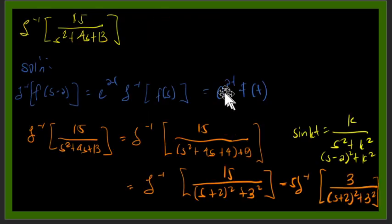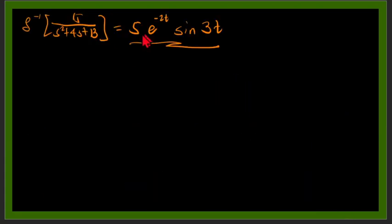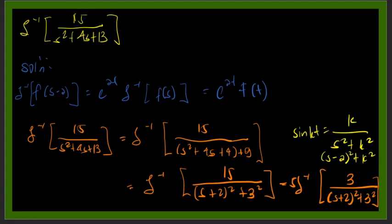And we follow also this one, e to the AT, which is our A equals negative 2, so that's why we have negative 2T. And the 5, we factor out the 5, so that we are left with 3 here, following the Laplace transform of sine KT.